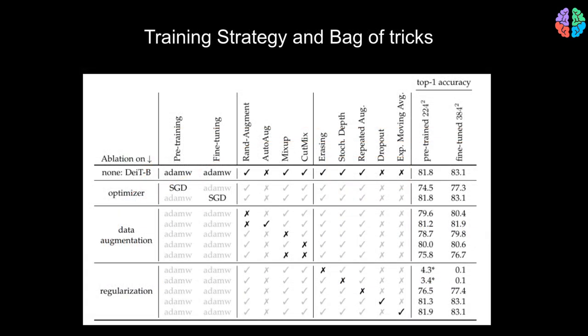Until this paper, training a transformer on images wasn't easy, so they adapted quite a few tricks and strategies to train the transformer successfully. This table summarizes the augmentation and regularization tricks used in order to arrive at the impressive results.